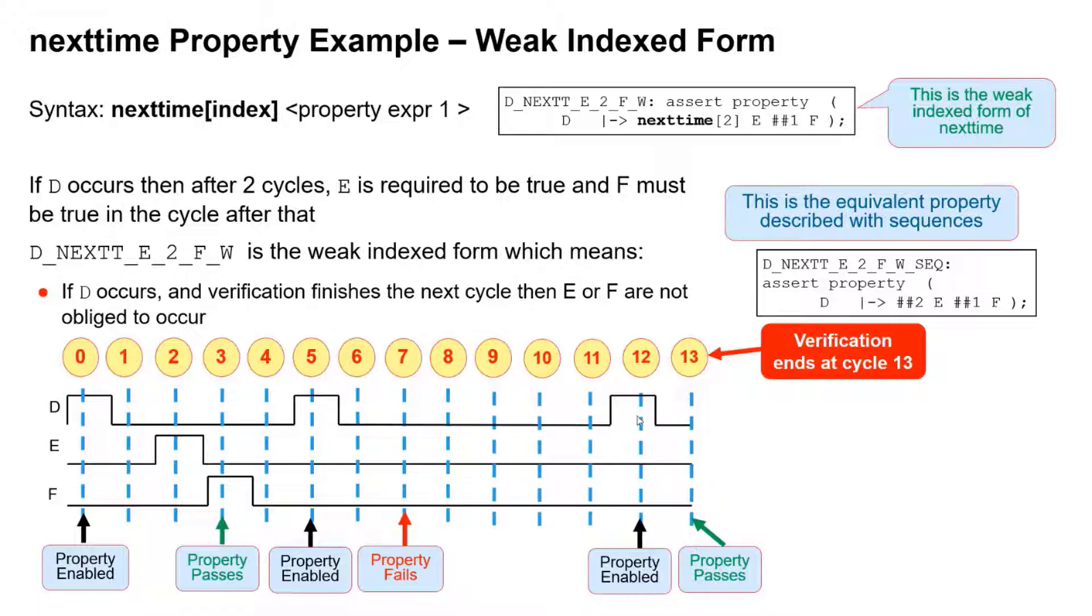Here we have d occurring again, so there's an obligation for the right-hand side to occur, but that obligation is a weak one. So if verification were to end the very next cycle, and we haven't had time to observe the two cycles and then e, then that property does not fail. Okay, and if property doesn't fail, then it passes.